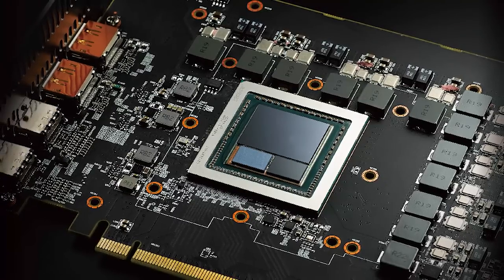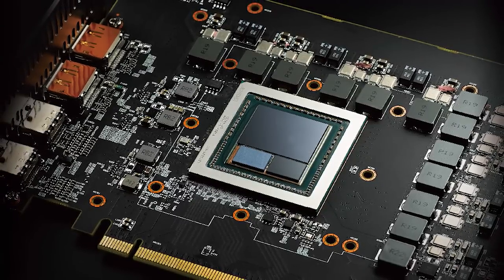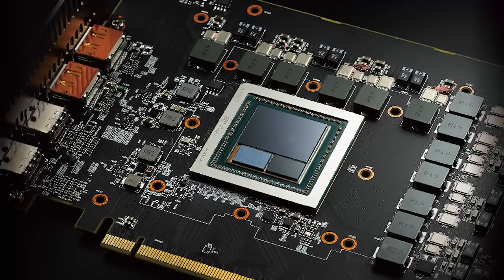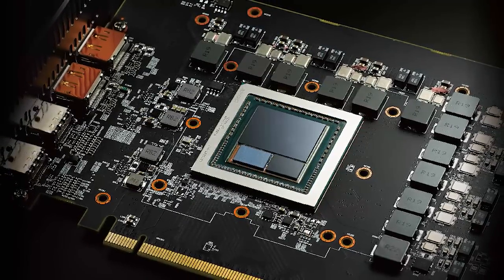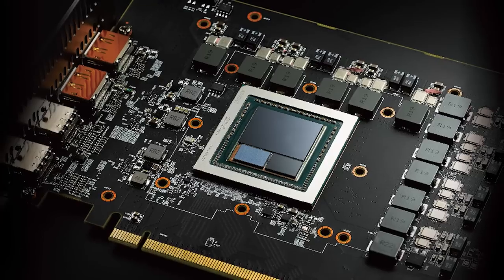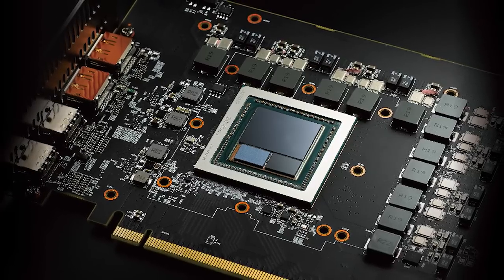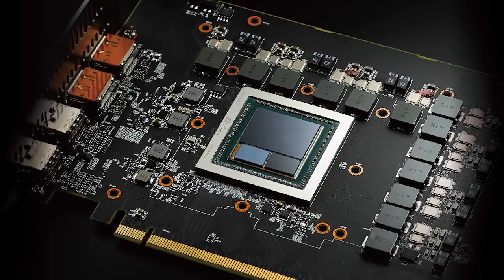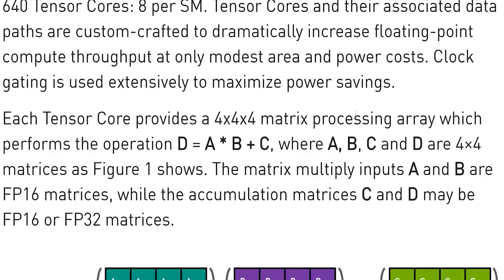But what makes a Tensor Core any different from a traditional GPU core? The way in which they handle calculations. Tensor cores are really no different in essence from the way a GPU core is designed — they're just specific in terms of what they do. They handle 4x4 matrix workloads.